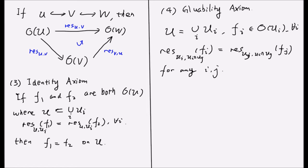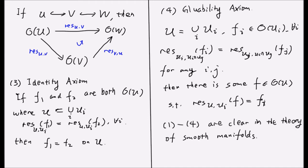Then we should expect that there is some f contained in the ring of smooth functions on U such that its restriction on each U_i is exactly the function we have taken at the beginning. Those three properties are clearly true in the theory of smooth manifolds and we will soon formulate those properties in the notion of a sheaf in a more abstract setting.